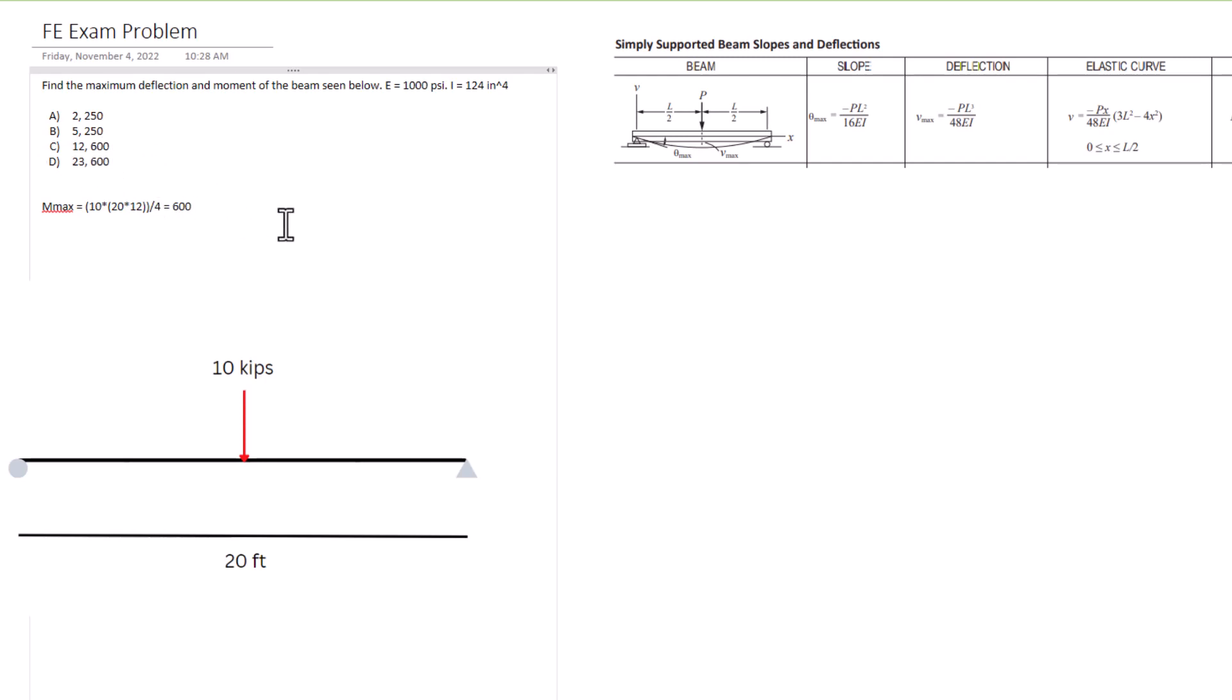We need to find the deflection, the max deflection here. So we need to have negative P, 10 kips again, times L raised to the third power. So 20 times 12, that's all going to be raised to the third power, divided by 48 E I.